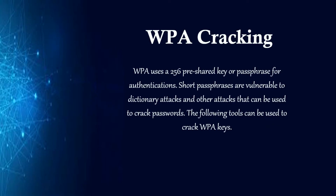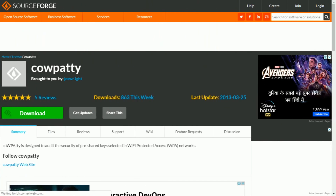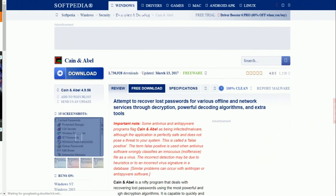WPA Cracking: WPA uses a 256-bit pre-shared key or passphrase for authentication. Short passphrases are vulnerable to dictionary attacks and other attacks used to crack passwords. Tools include: Cowpatty — used to crack pre-shared keys (PSK) using a brute force attack. Cain and Abel — can be used to decode capture files from other sniffing programs such as Wireshark; the capture files may contain WEP or WPA-PSK encoded frames.